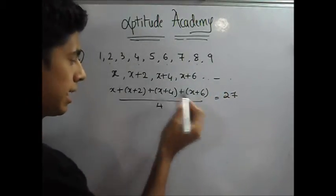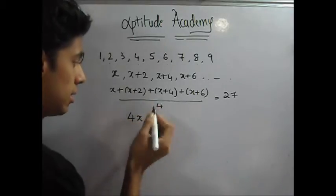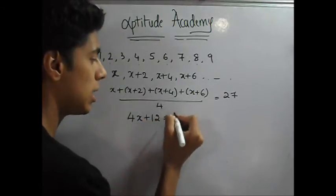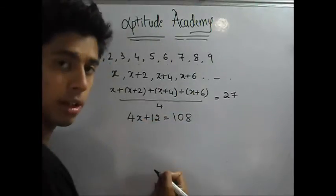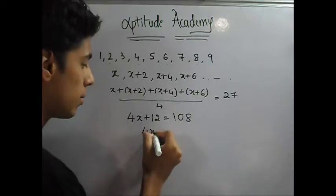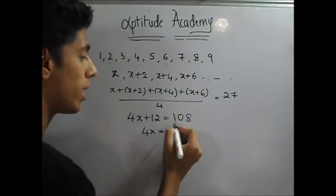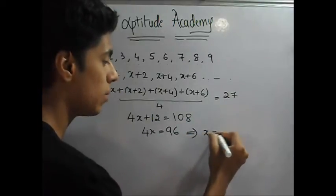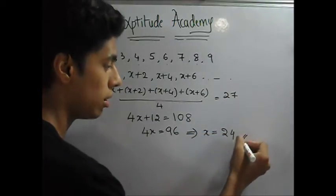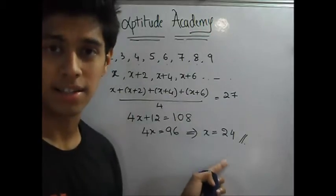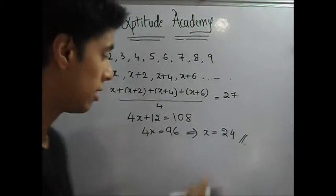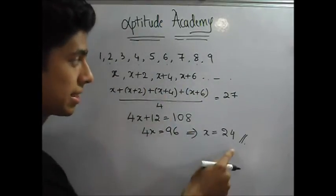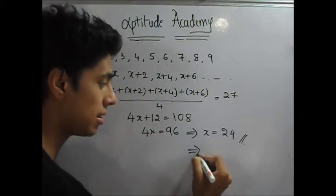Now add this up. You have x, x, x and x, so it gives you 4x. Plus 6 plus 4 is 10, 10 plus 2 is 12. So 4x plus 12 is equal to 108. Now 4x is equal to, take 12 this side. 108 minus 12 is 96, which implies x is equal to 24. Now this is not your answer. They have asked you to find the greatest value. x is equal to 24 is the first value. Your greatest value will be x plus 6. So your actual answer is 30.